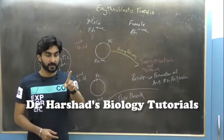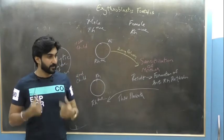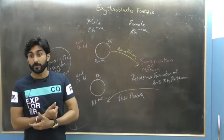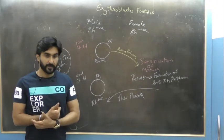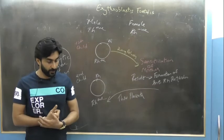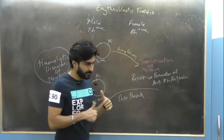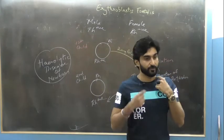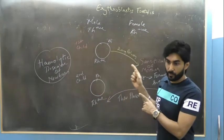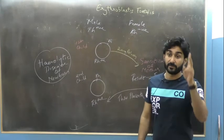If the RBCs of the second child are destroyed, the baby can die of severe anemia in the womb. If the baby survives, high levels of bilirubin from hemoglobin breakdown cause severe jaundice, which damages the brain. Therefore, it is essential to match blood groups, particularly RH status, before marriage and pregnancy to prevent erythroblastosis fetalis.